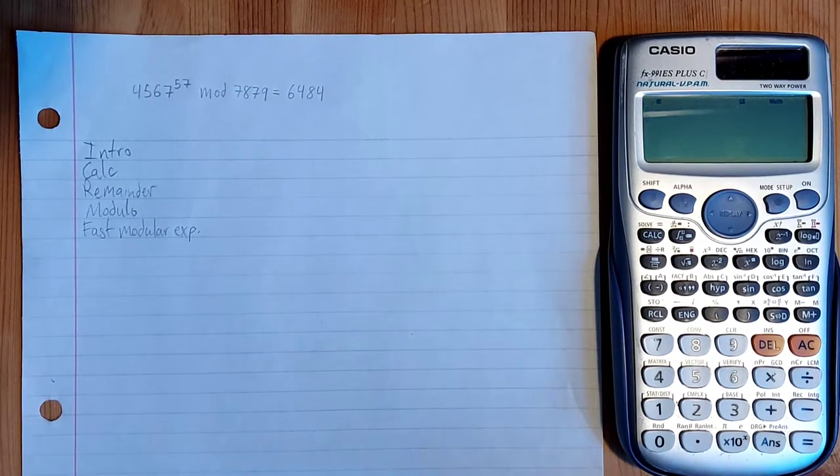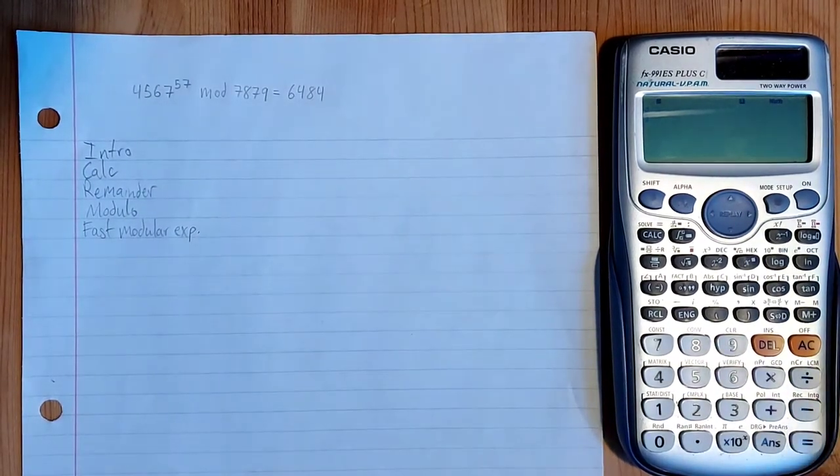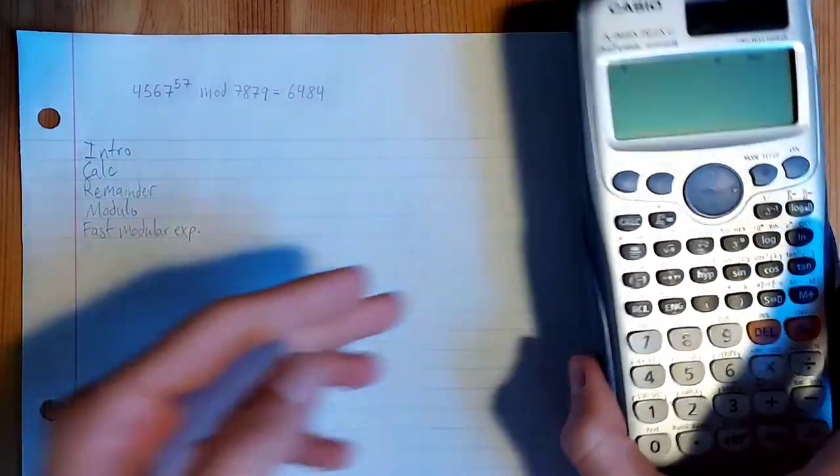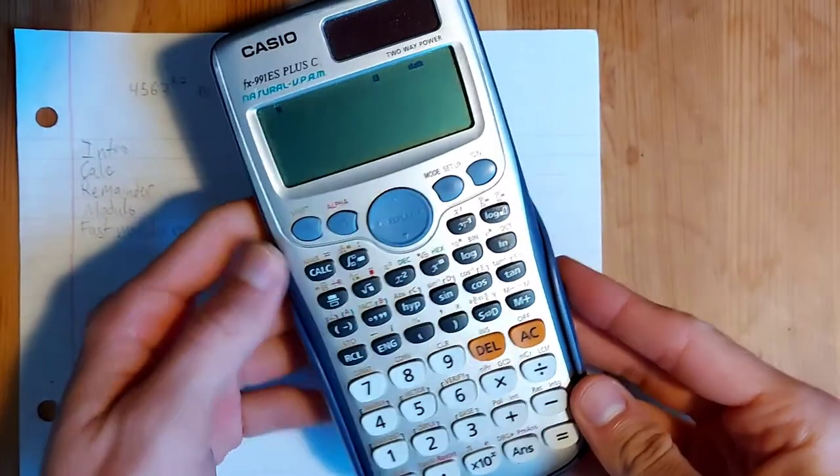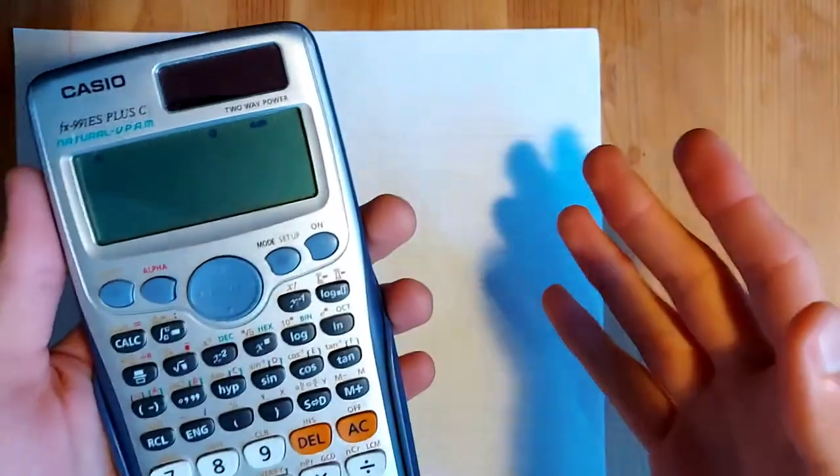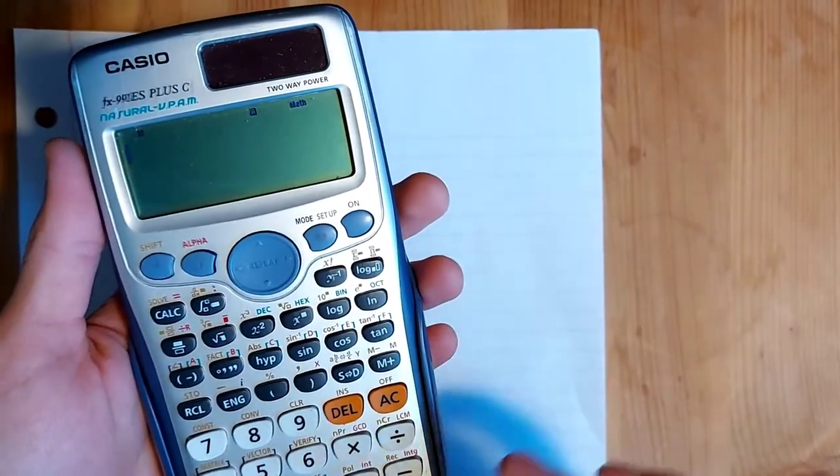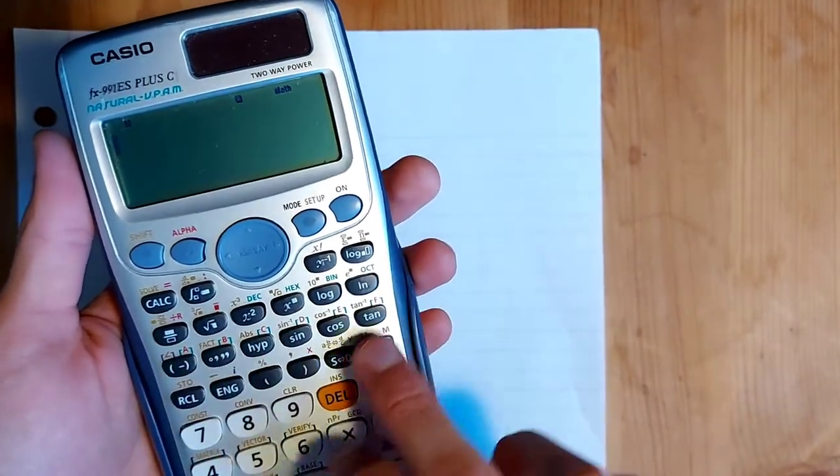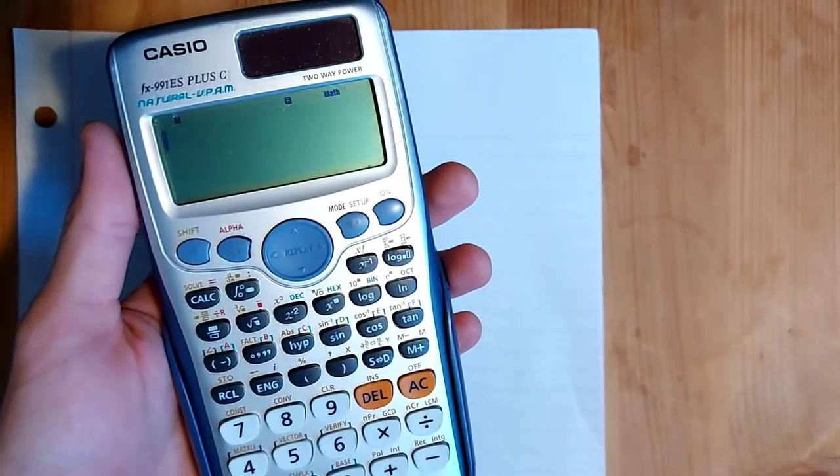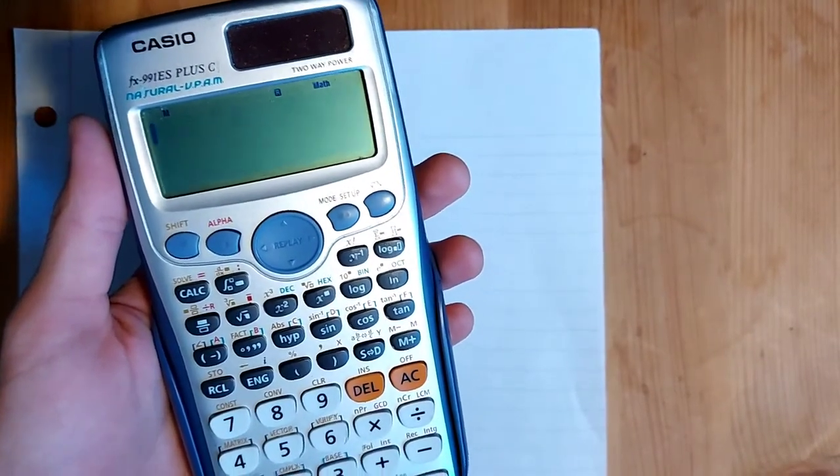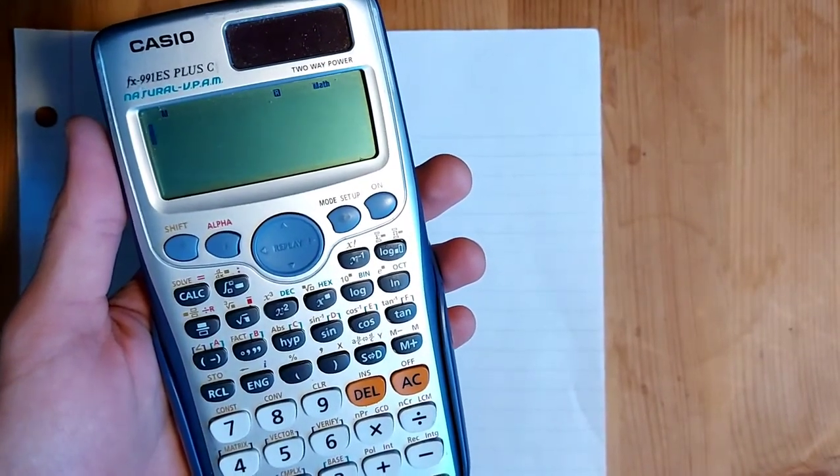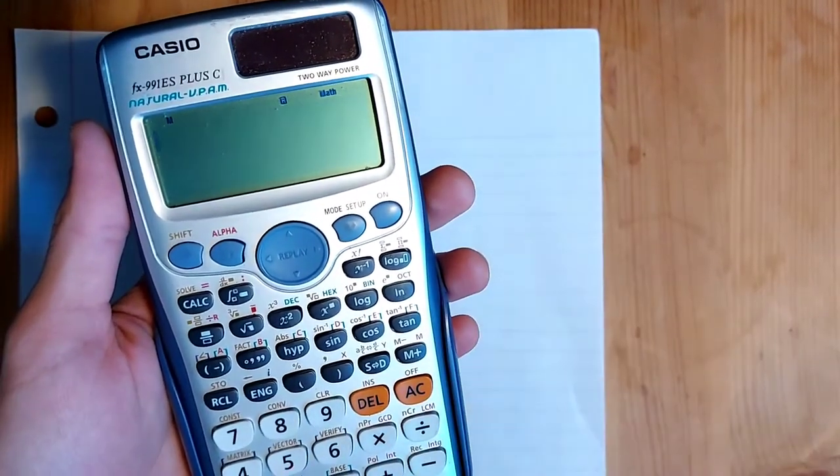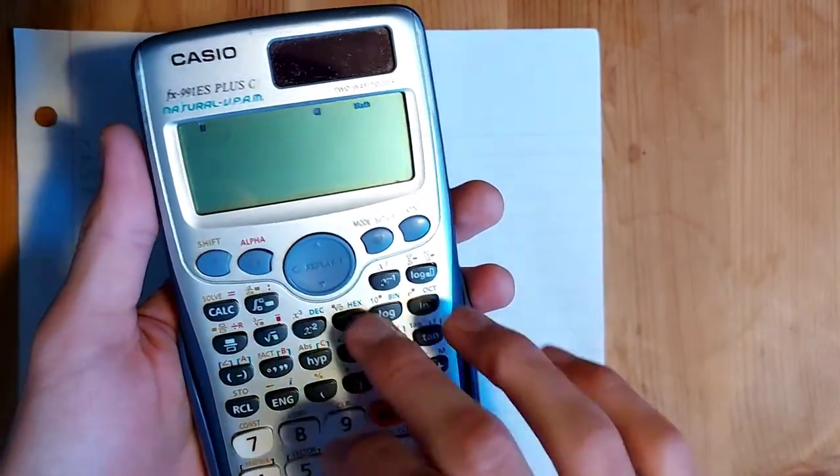Okay, so a quick introduction to one of the main features that I'll be using throughout this whole video, and that is this calc button. In essence, what this allows you to do is enter in an equation using variables such as a through f and x, y, and m. You can enter in an equation that uses multiple of these variables, and then press calc, and it'll allow you to substitute in different values for the variables.